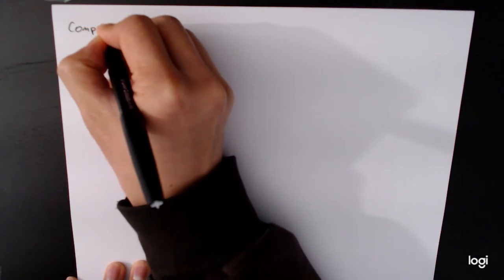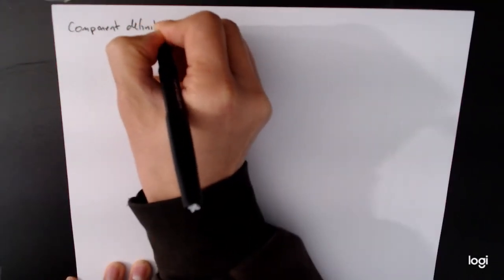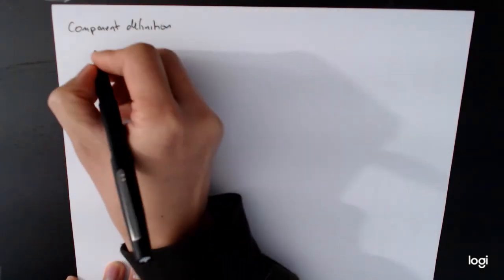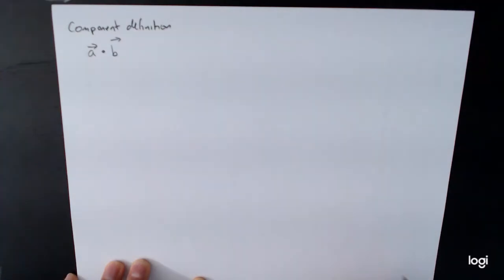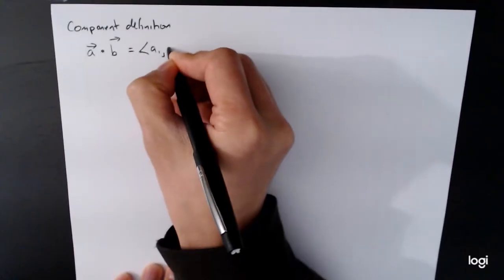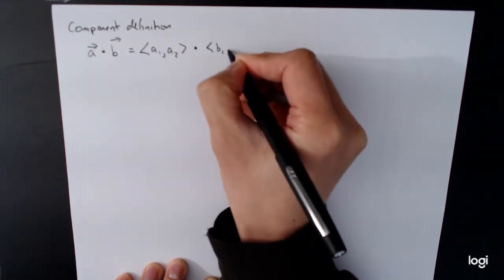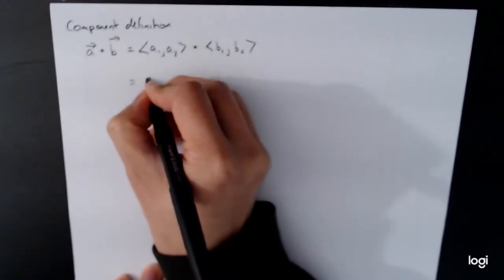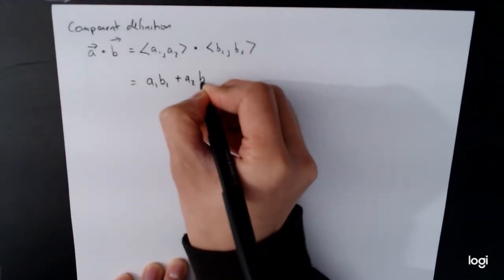We have one definition based on the component definition. And so we have the vector a dot b, and this is just a dot between them. If we have a1 comma a2 as the vector a dot b1 comma b2, the dot product is going to be a1 b1 plus a2 b2.